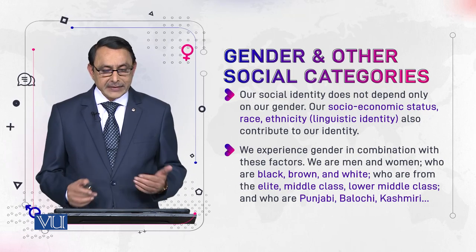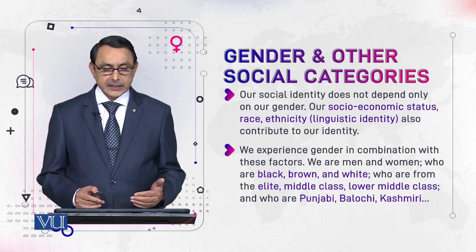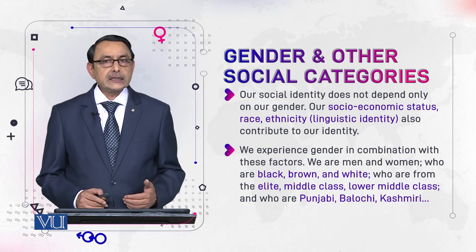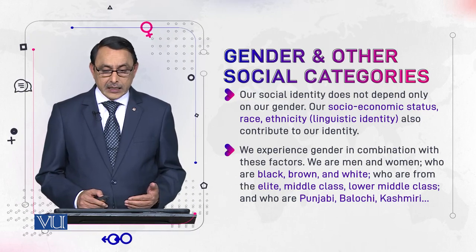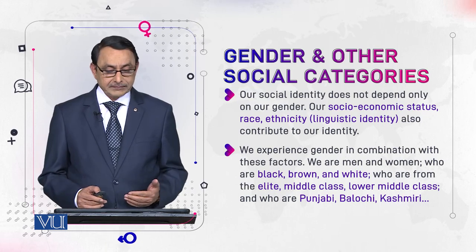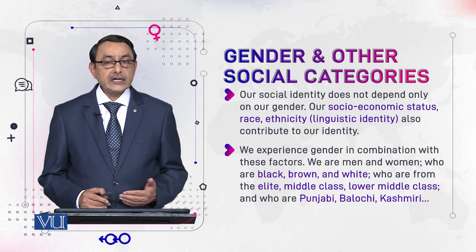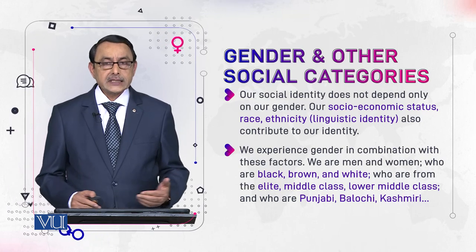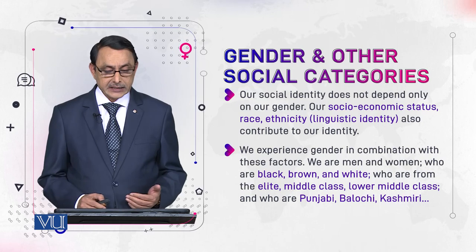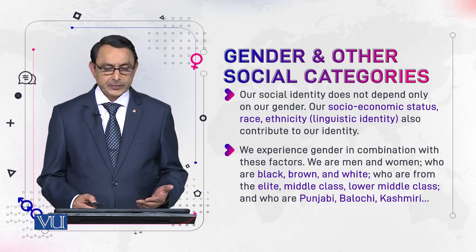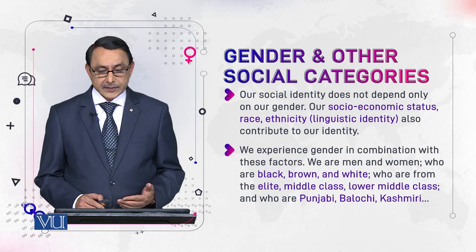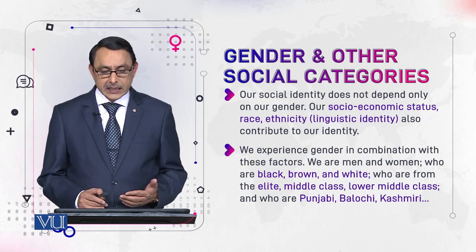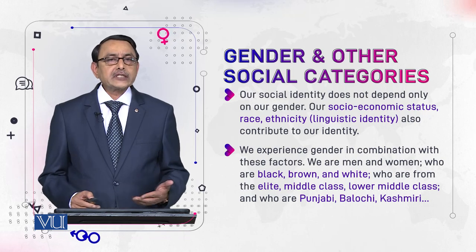We are men and women — this is our biology. We are black, this is our race. We are black, brown, white, and yellow — Japanese, brown Asians, black Africans, and white, usually Europeans. And who are we with reference to our economic status?